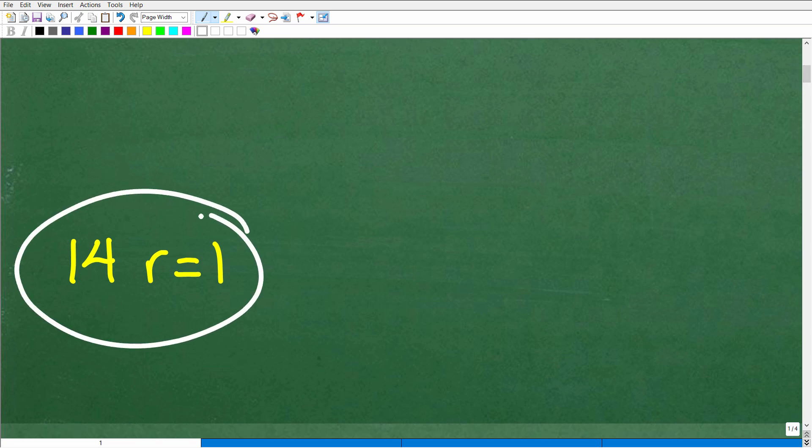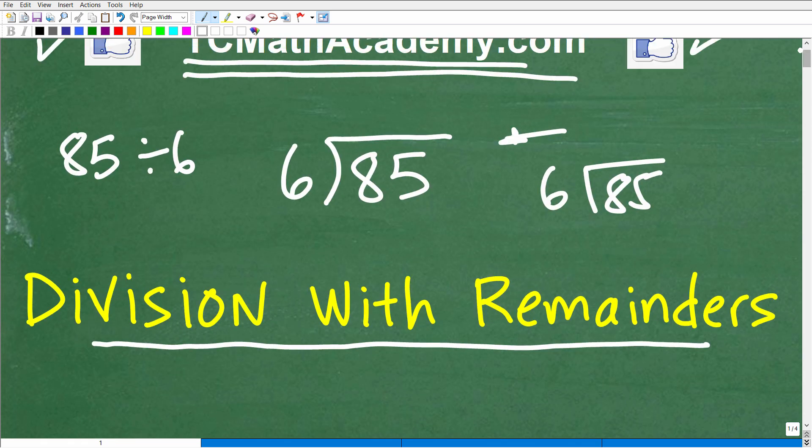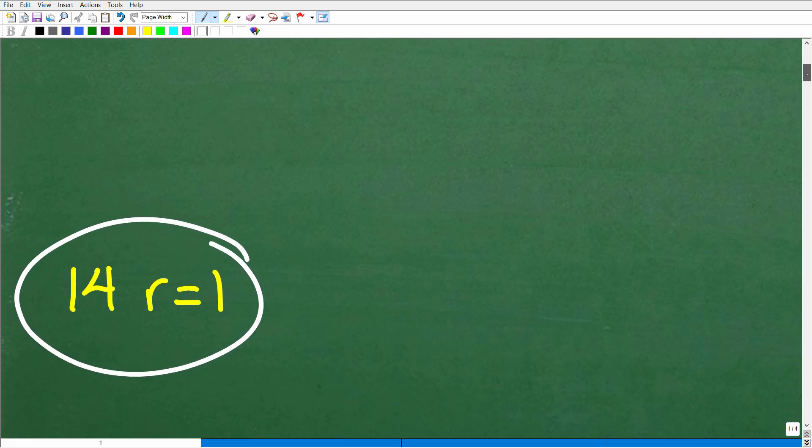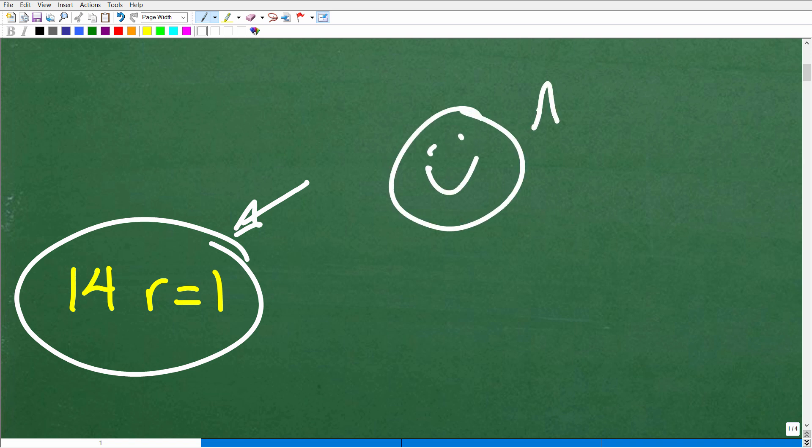But here is the answer. It's 14 remainder equal 1. If you write the problem 85 divided by 6, you need to write it in either this format or this format to do this problem. These are equivalent ways to express this division problem.